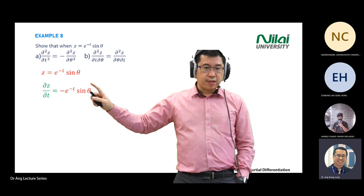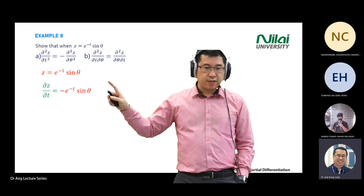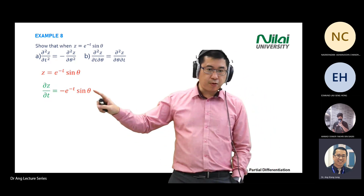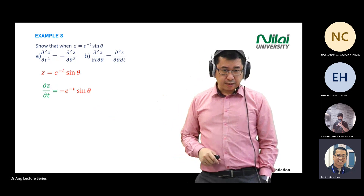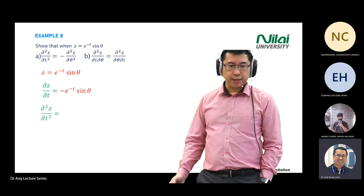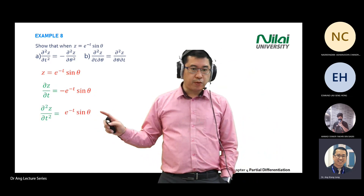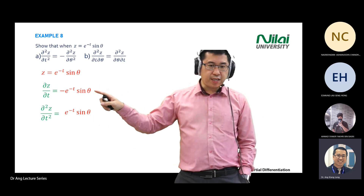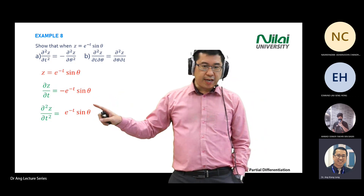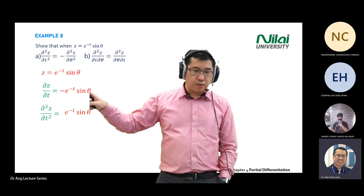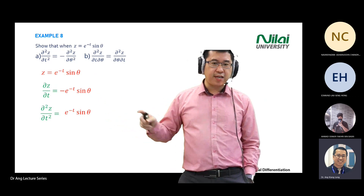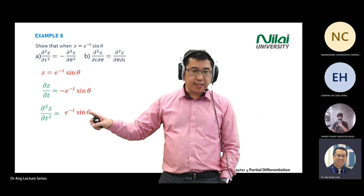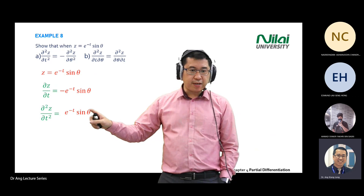The question asks for double differentiation over t, so you differentiate one more time. Inside this equation there is only one t — sine theta carries forward. You differentiate negative e to the negative t: carry the negative, differentiate e to the negative t again, the inner derivative of negative t gives negative 1. Negative one times negative e gives positive e to the negative t sine theta.